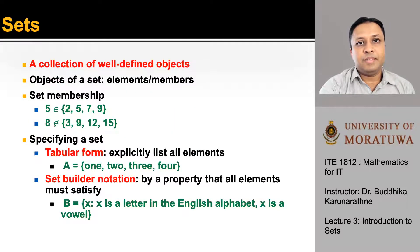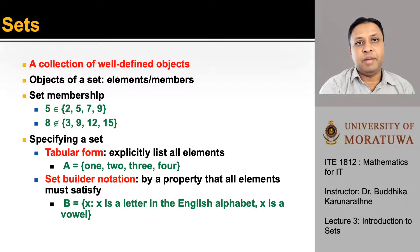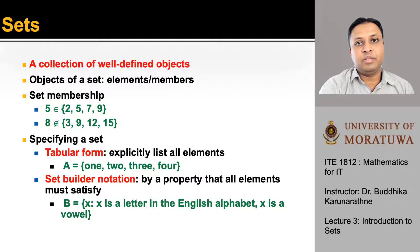Let's first take an introduction to sets. A set is a collection of well-defined objects. The objects of a set are often called elements or members of the set. For example, five is a member of the set containing two, five, seven, and nine. Similarly, eight is not a member of the set which includes the members three, nine, twelve, and fifteen.